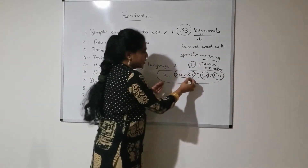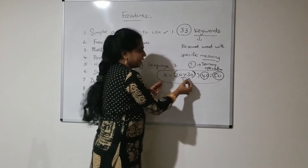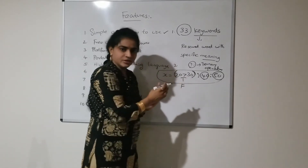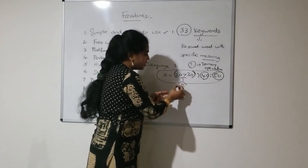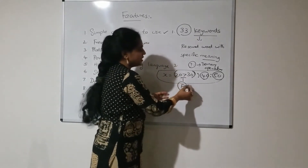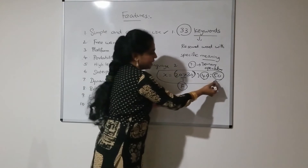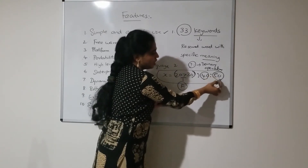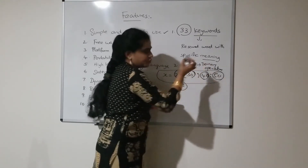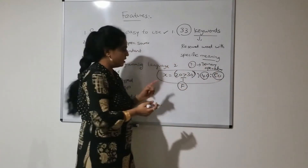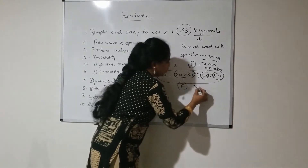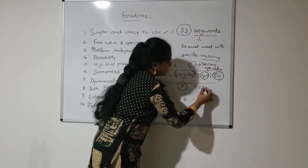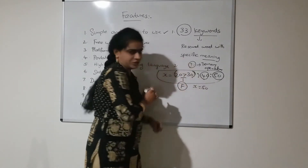Is this condition true? Is 20 greater than 30? False. So if the condition is false, the one followed after the colon has to be executed. So x contains the value of 50 — that is the output.